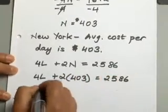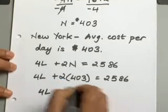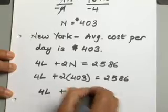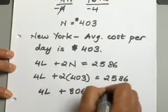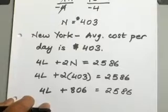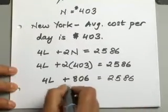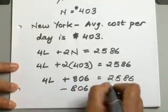So let's go ahead and see what that will be. 4L plus 806 equals 2,586.